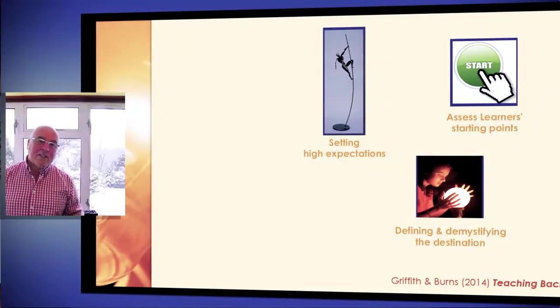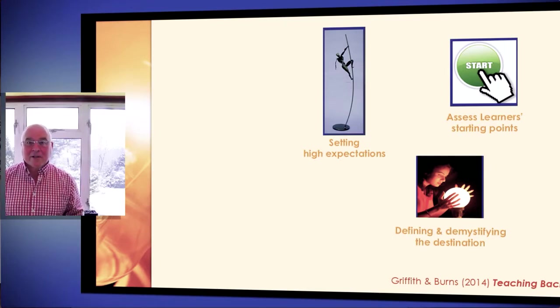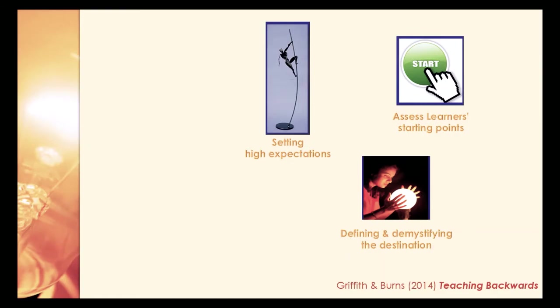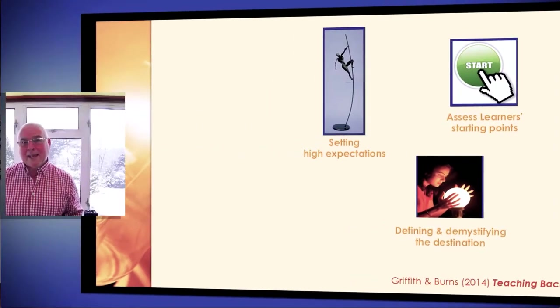It's also important to define and demystify the destination. When people say they're signing up for a master's degree, a lot of them realise they may have to do a substantial piece of work such as a dissertation towards the end. For many, they might have only experienced a dissertation as far as writing a literature review for their bachelor degree. So what's the difference now with the particular assignments they have to do, the contribution to learning, and the final production of whatever they're doing on specific modules and the programme as a whole?